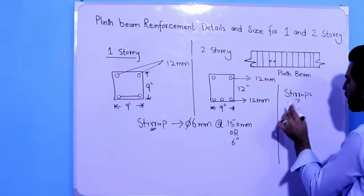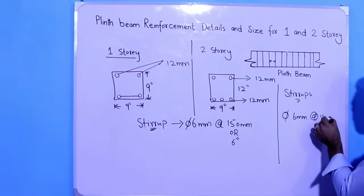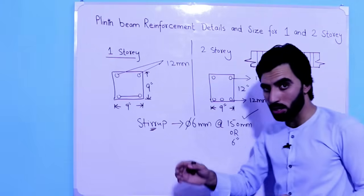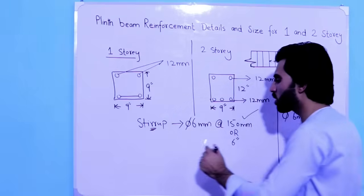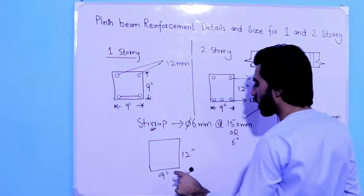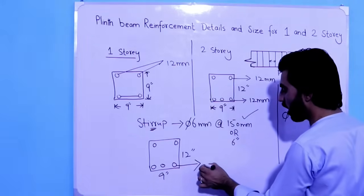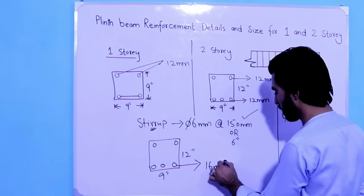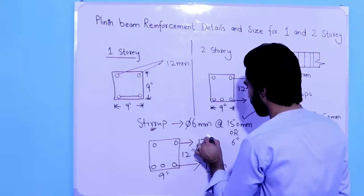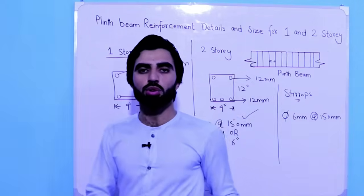For the stirrups in a two story building, use the same 6 mm diameter at a spacing of 150 mm, same as for one story. For a normal three story building you can also use this same design, but change the bottom bar diameter to 16 mm while keeping the top bars at 12 mm. The depth remains 12 inches for three story as well.